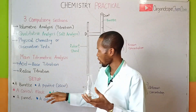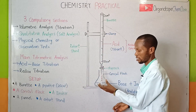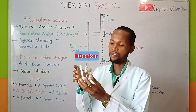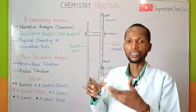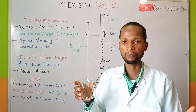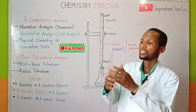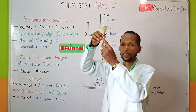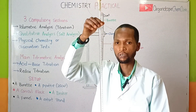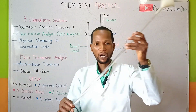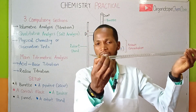The third apparatus needed is the conical flask. Here is a beaker — we can use the beaker to hold a solution of the titrant or the analyte as the case may be. We can also use the funnel to introduce the titrant into the burette, pouring it through the funnel so it goes down into the burette.